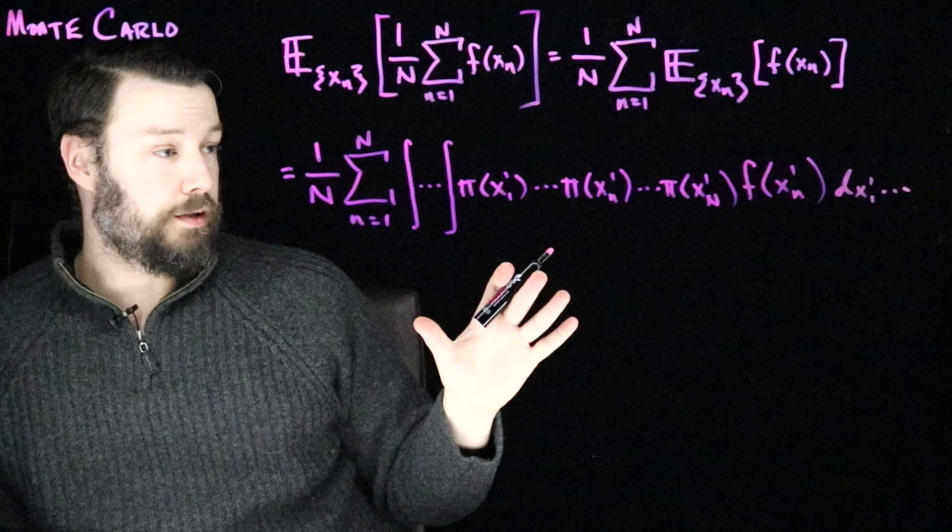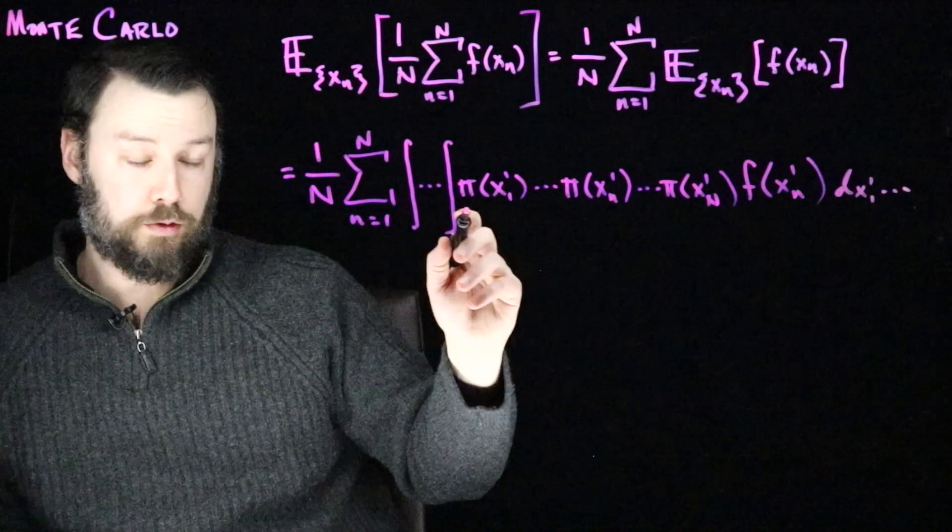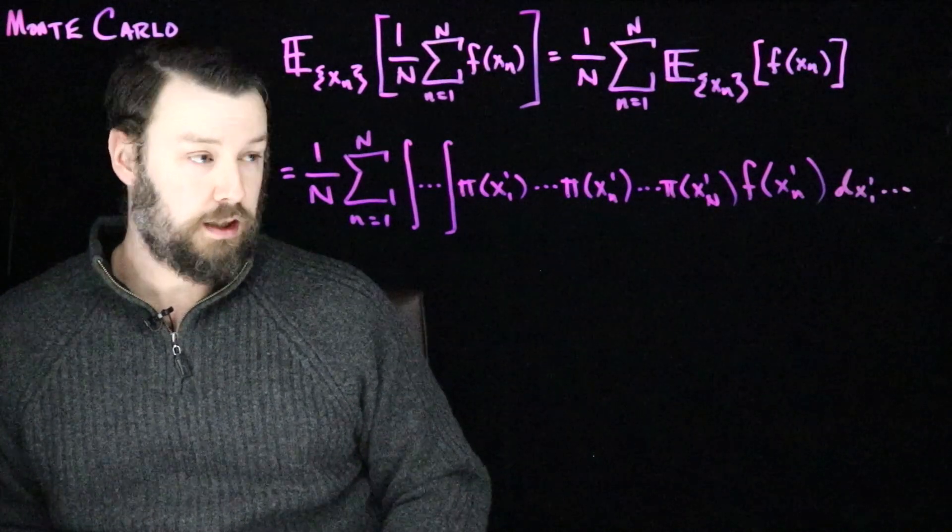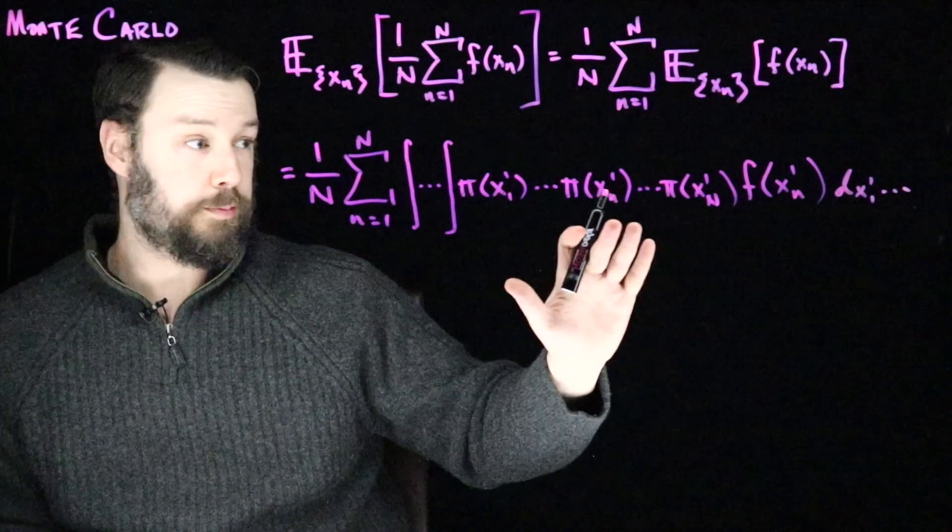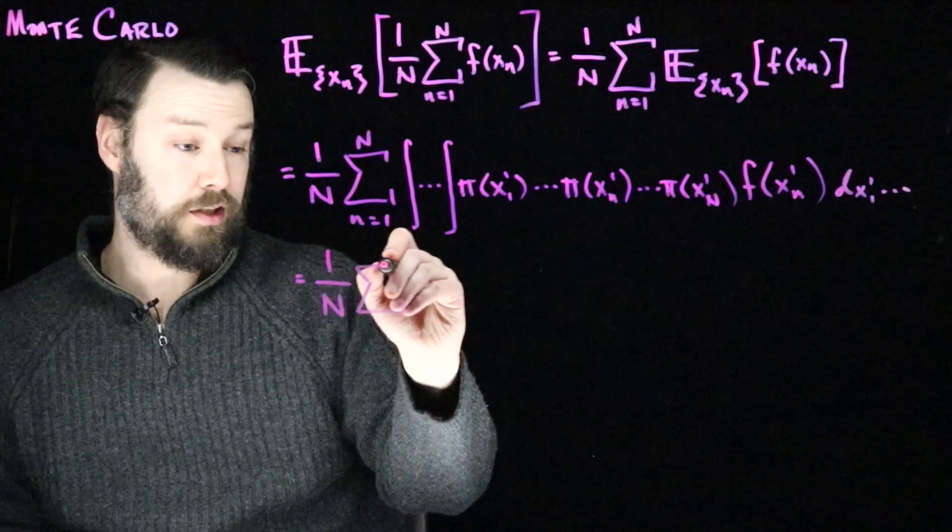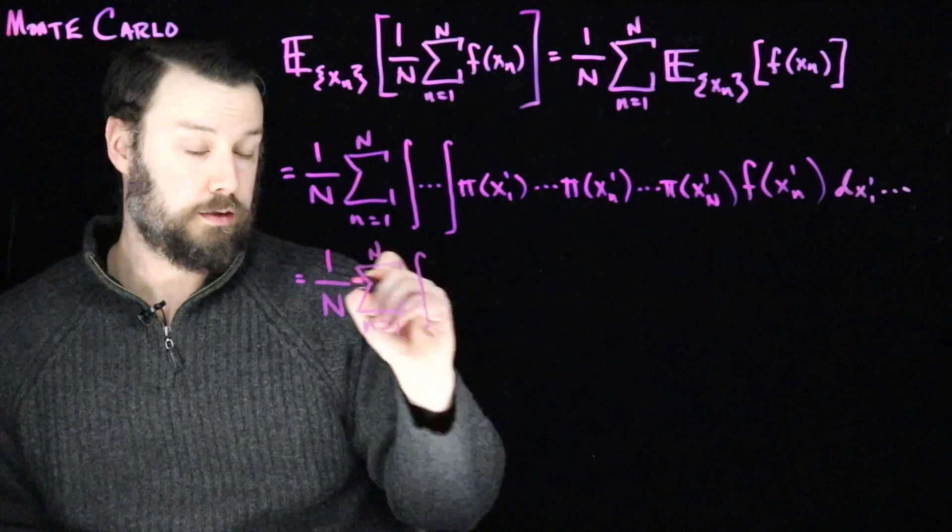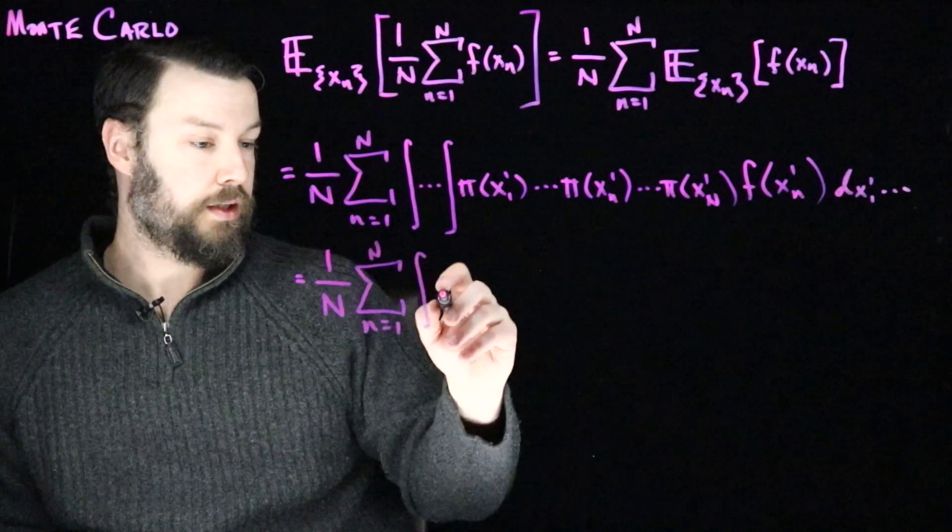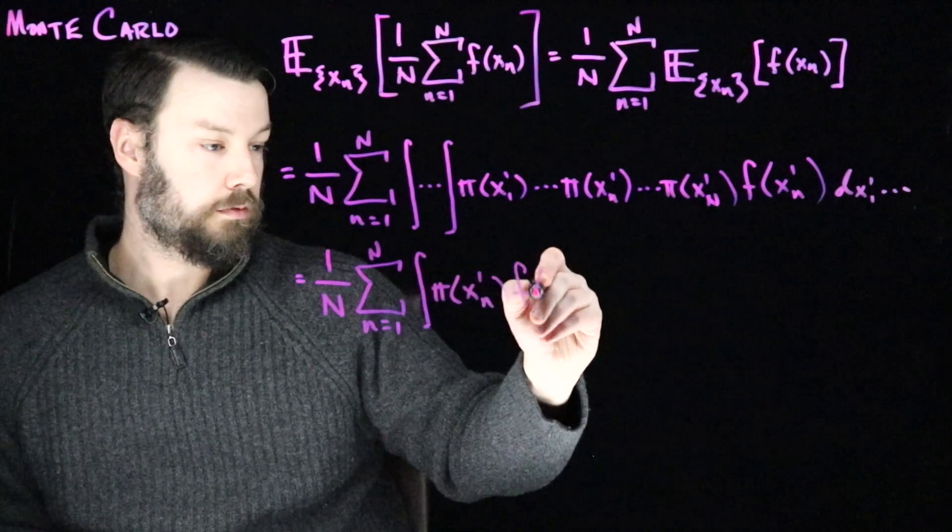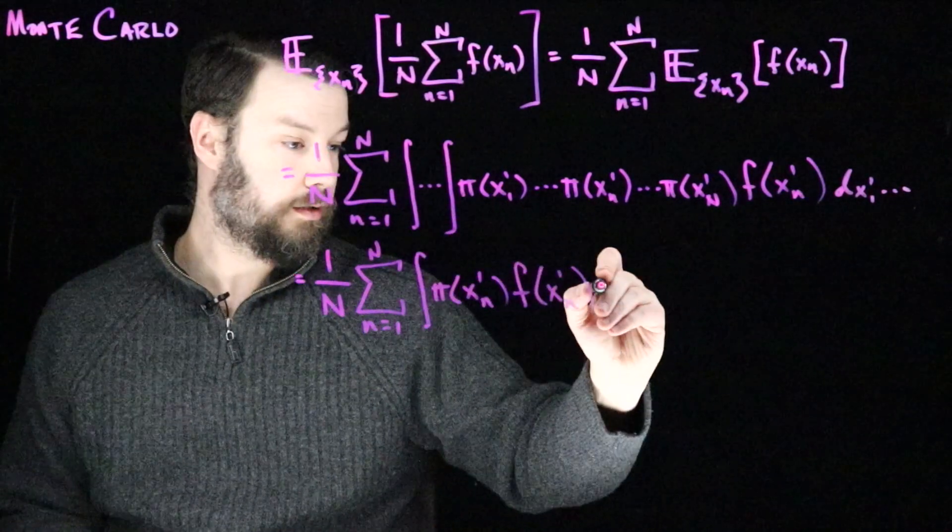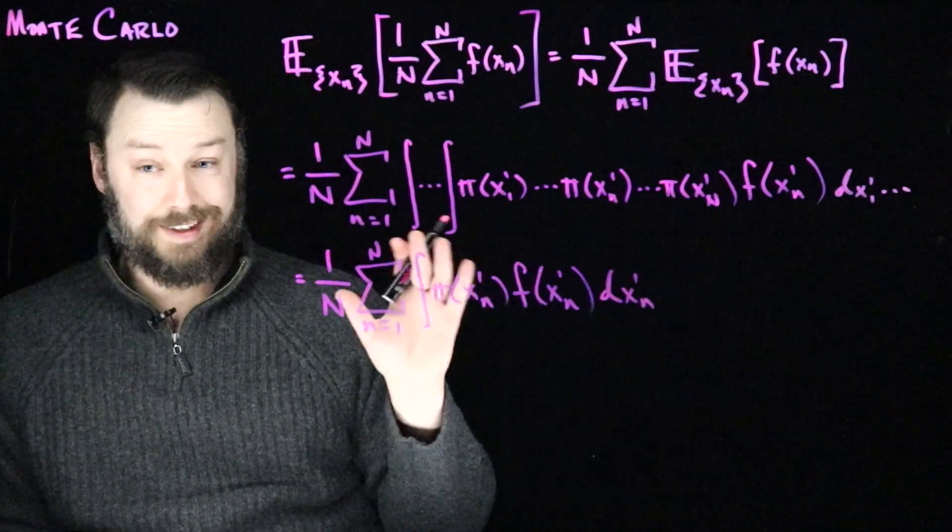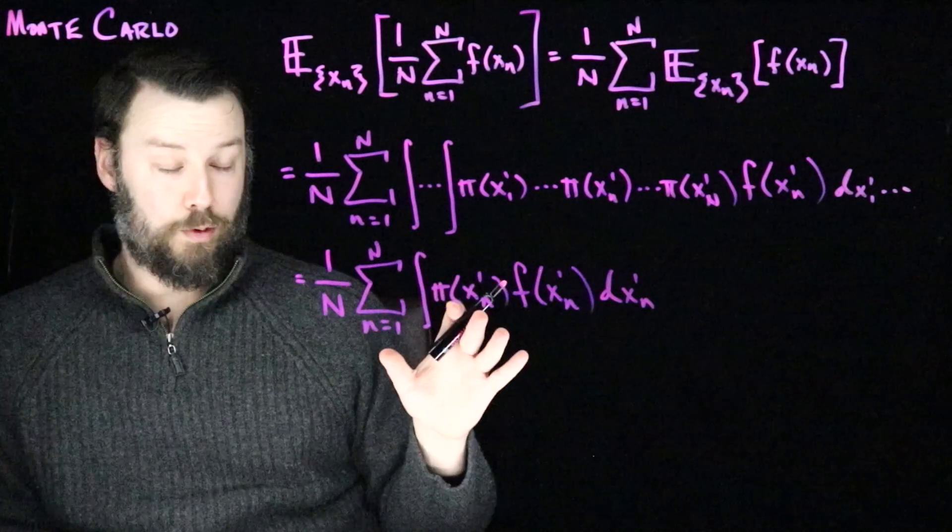Now that looks like a complicated and annoying expression, except that we know because all of the pis are probability density functions, they all integrate to one. And so all of these x primes, except for this one, can easily go away. Because when we integrate them, they just become one. So now I only have one integral that I have to care about. And that is going to be pi x prime of little n, f applied to that, and then only that one.